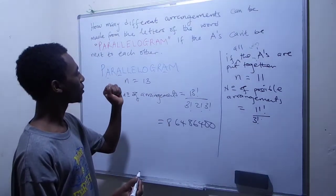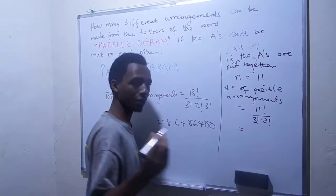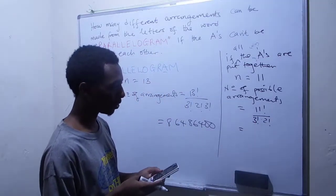And then we have, what else? We have the R's, this and this. So that's times 2 factorial. Let's put that on the calculator still to see what we get.